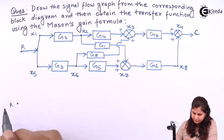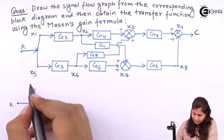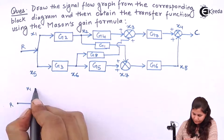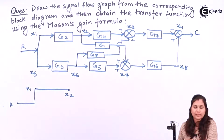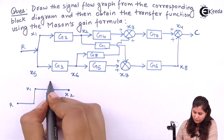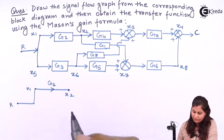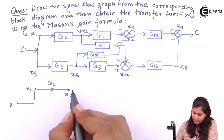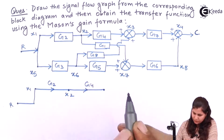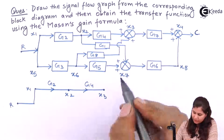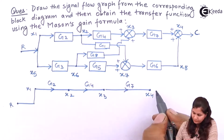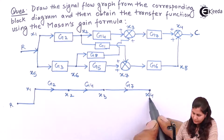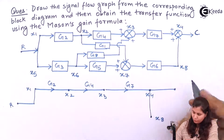This is R, then here we have x1, then we have x2. Between x1 and x2, block g2 is connected having the transmittance g2, written on the arrow. Then between x2 and x3 we have g4. This is g4, this is x3. Between x3 and x4 we have g7. And again this x4 is taken downward — it is x8 — and x4 is also connected to the output node C.